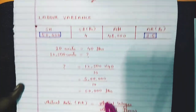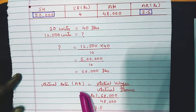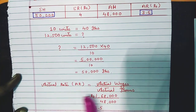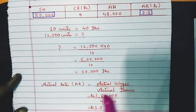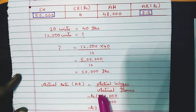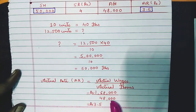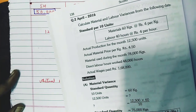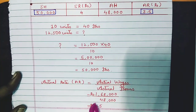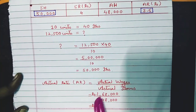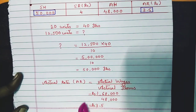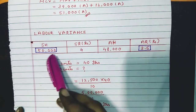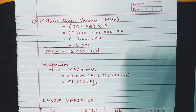Actual rate is not directly given, so we compute it: Actual Wages ÷ Actual Hours = 1,68,000 ÷ 48,000 = 3.5 rupees per hour. We now update the table: standard hours = 50,000, standard rate = 4, actual hours = 48,000, actual rate = 3.5.